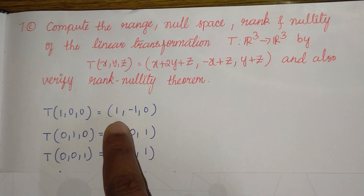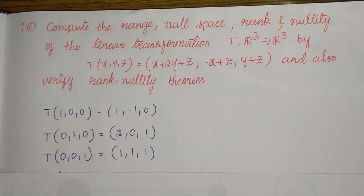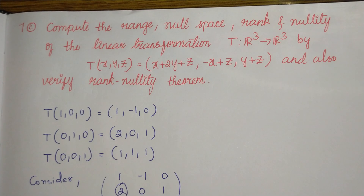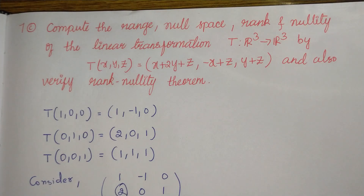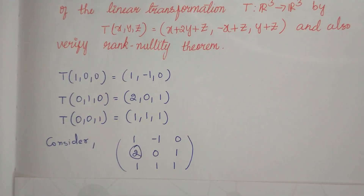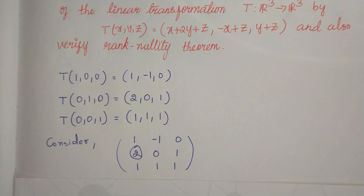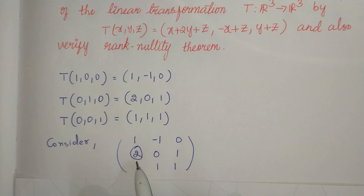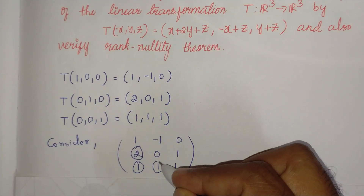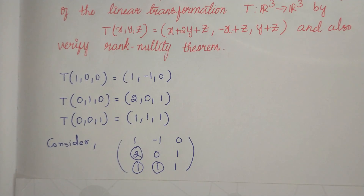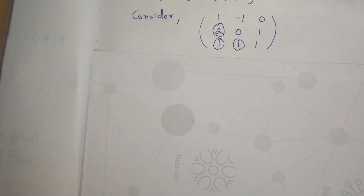We form a matrix where the first row is (1, -1, 0), the second row is (2, 0, 1), and the third row is (1, 1, 1). We now calculate the rank and nullity by reducing this matrix into row reduced echelon form. In the first row, 1 is the leading entry, and the elements below it must be made 0 by suitable row operations.